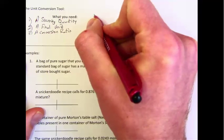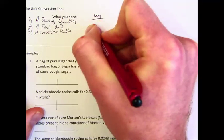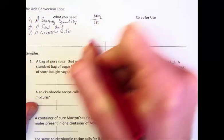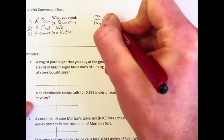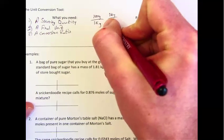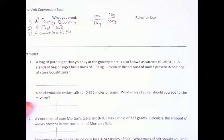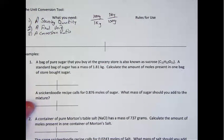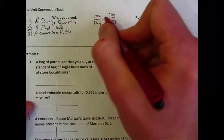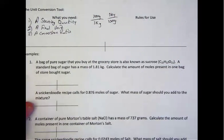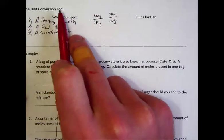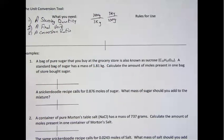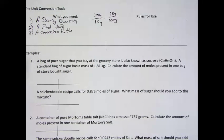So for example, we all know that 1000 grams is equal to one kilogram and we can write that either this way or we can write that as one kilogram over 1000 grams. Both of those are valid conversion ratios. We need to know which one to use and when. So because of this problem, we have the solution, which is our unit conversion tool that tells us exactly which ratio to use and when.